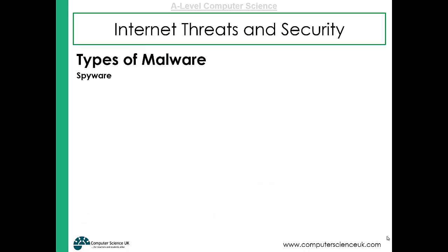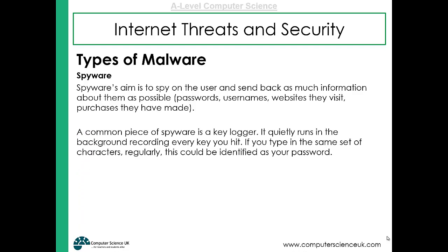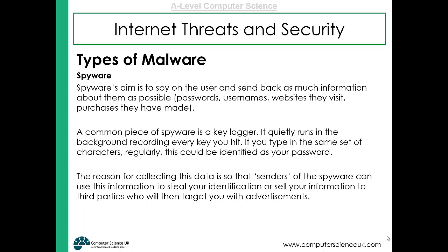Another type of malware is spyware. This type of malware is there to target the user — to spy on them and send back to the criminal as much information as possible, such as passwords, usernames, and websites they've visited. A common piece of spyware is a key logger, a little program that runs in the background and records every key hit. It finds patterns in strings of characters you type repeatedly, allowing the criminal to learn your password. The data is collected so criminals can steal your identity or sell your information to third parties who can target you with adverts.